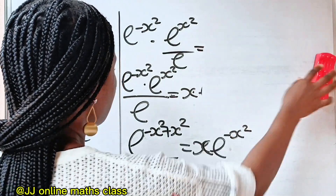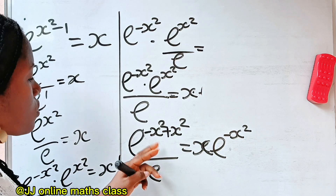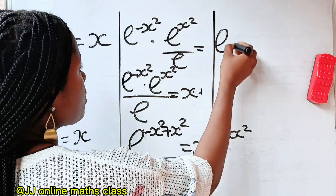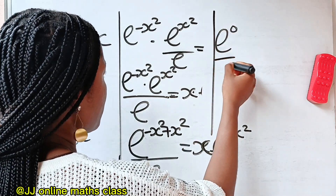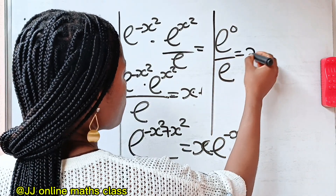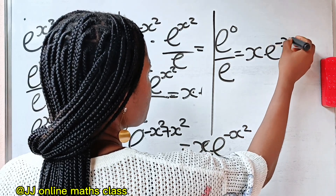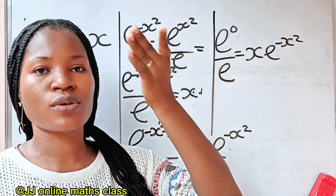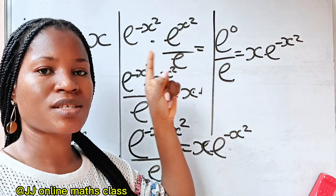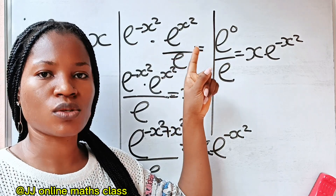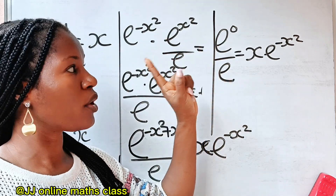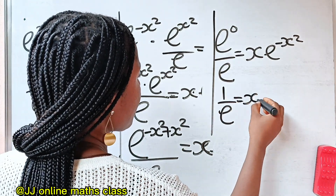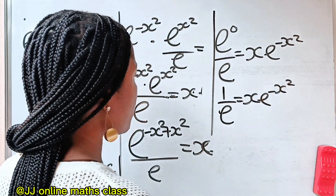Remember that minus a plus a is zero, so minus x squared plus x squared gives us zero. What we have is e to the power of zero divided by e is equal to x times e to the power of minus x squared. Any number to the power of zero is one, so e to the power of zero is one. We have one over e is equal to x times e to the power of minus x squared.